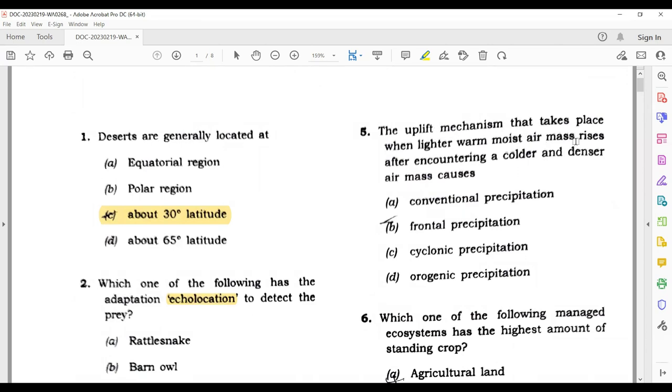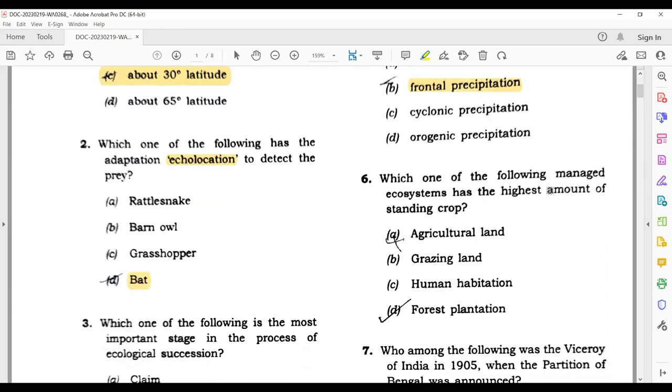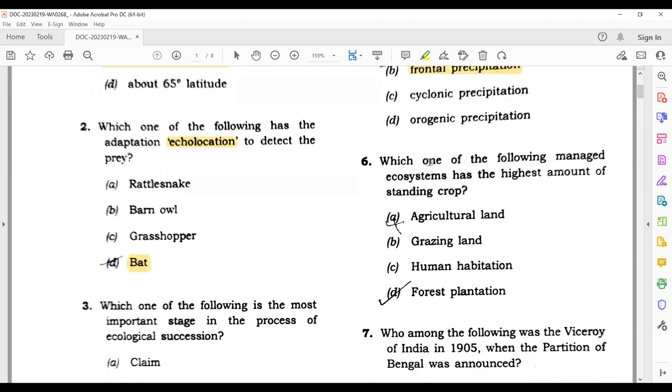Now question number six: which one of the following managed ecosystems has the highest amount of standing crops? Standing crops means all the living things. Most living things are in agriculture land, grazing land, human habitation, or forest land. So forest land is your correct answer here. Come to question number seven. This is a very simple question. If you've even just searched on Google about our modern history, the first topic which comes is this one - Bengal partition and Lord Curzon.